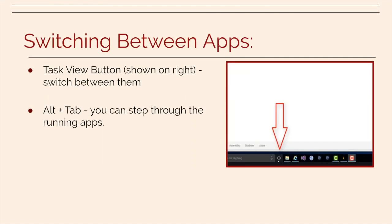You can also switch between apps two ways. You can click on the apps on the taskbar or hit Alt+Tab to step through the running apps.